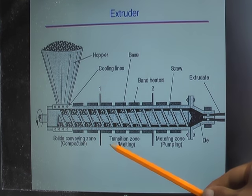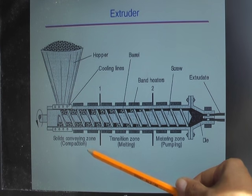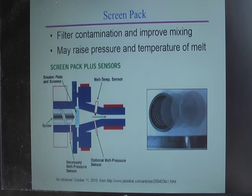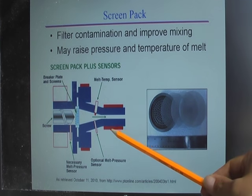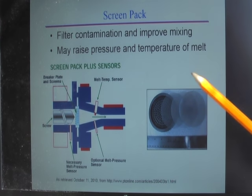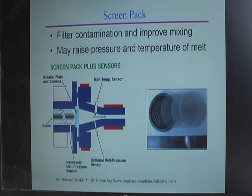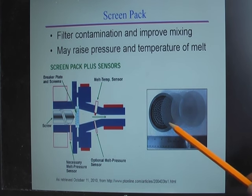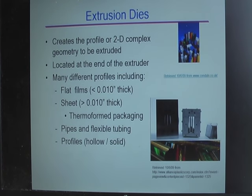The product that comes out is generally called extrudate. We can divide the extruding process into three zones: solid conveying zone, transition zone, and the pumping zone — we'll talk about these zones later. In the industry they also use a so-called screen pack. It has two functions: one is to filter out contamination, and the second is to improve mixing. However, using a screen pack can also raise the pressure and temperature of your polymer melt. This is what the screen pack looks like — it's like meshes.